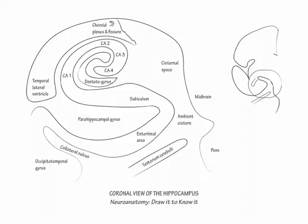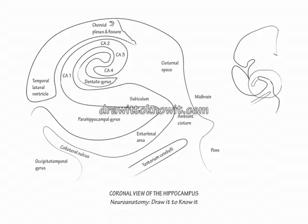From this angle, we can see that during uncal herniation, the medial temporal lobe first compresses the ipsilateral third nerve as it exits the midbrain, and then compresses the contralateral cerebral peduncle against the tentorium. This compression forms the so-called Kernohan's notch in that peduncle, causing body weakness on the side of the herniating temporal lobe. This concludes our drawing of the coronal section of the hippocampus.